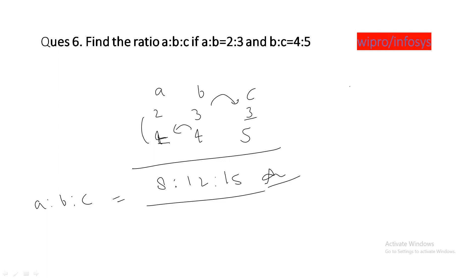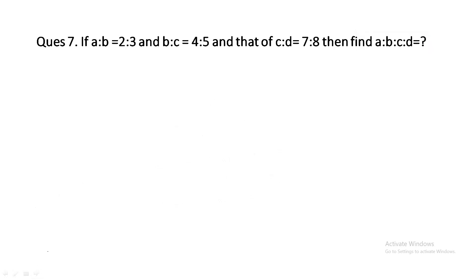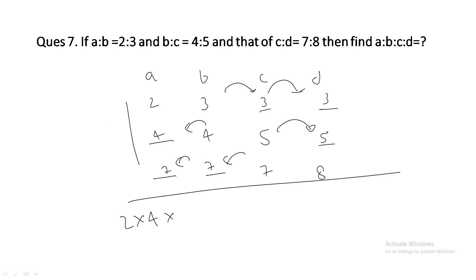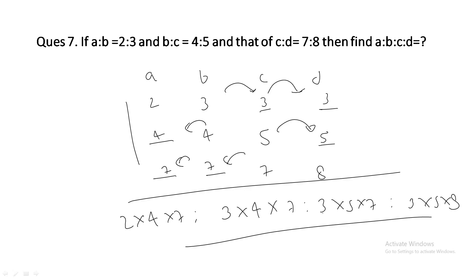The next question is similar: find A:B:C:D given A:B = 2:3, B:C = 4:5, and C:D = 7:8. Write A, B, C, D and fill the blank positions: 3, 4 for B, 5 and 7 for C, and 7 and 8 for D. Then multiply across: A = 2×4×7, B = 3×4×7, C = 3×5×7, D = 3×5×8. Simplify to get the final ratio.